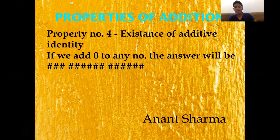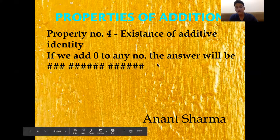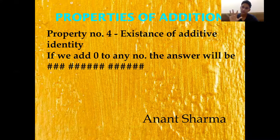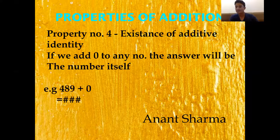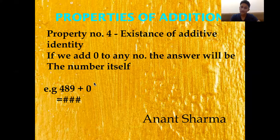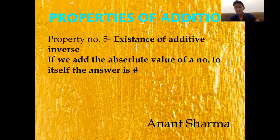Property number 4 is the Existence of Additive Identity. If we add 0 to any number, the answer will be the number itself. For example, 489 plus 0 equals 489.